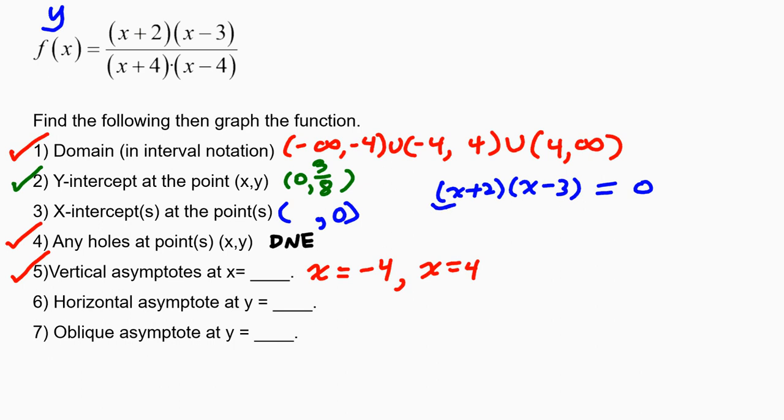Now I know that if this factor were 0, then the whole thing would become 0. And I also know that if this factor were 0, then the whole thing would become 0. So setting each of those equal to 0, I get x equals negative 2 and x equals positive 3. Those two values of x will coordinate with a y value of 0. So that is where the function will cross the x-axis.